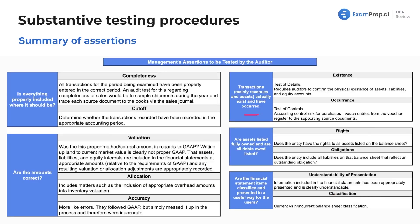We've got our management assertions. This is covered in our business cycles — cash cycle, revenue cycle, and others — but it never hurts to see it again. Management makes these assertions: the financial statements are complete, properly cut off, and properly valued. The auditor is going to test these to make sure what management is asserting is correct.